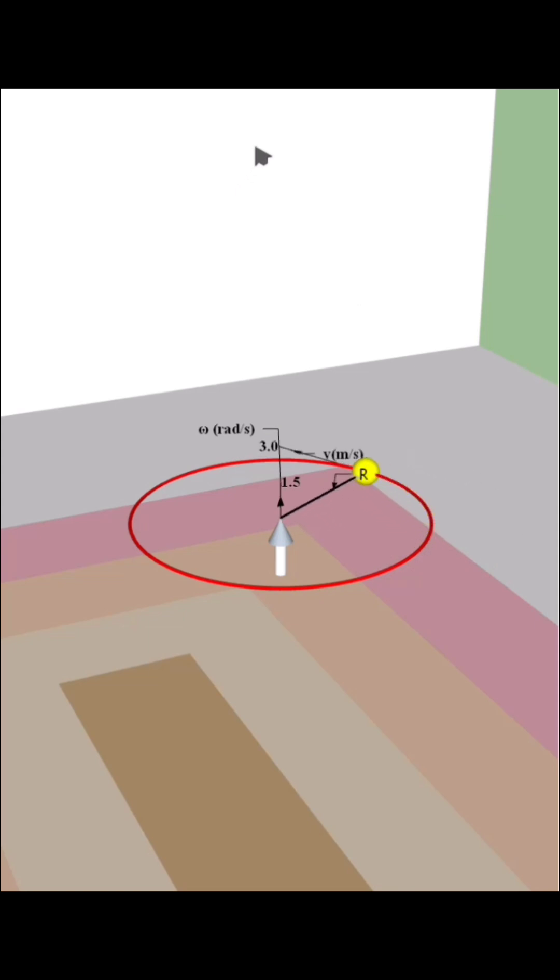The direction of linear velocity is along the tangent to the circle. The direction of angular velocity is given by the right hand thumb rule.